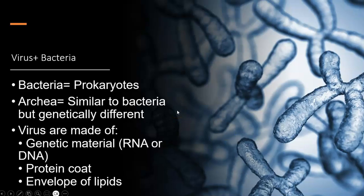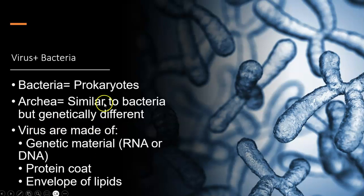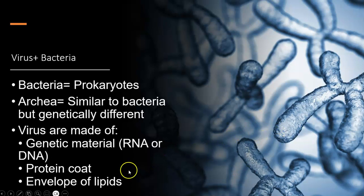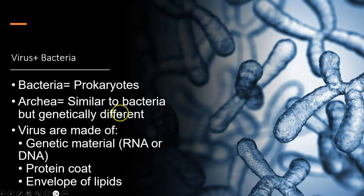The first thing you're going to go over is viruses and bacteria. You're going to want to know that bacteria are prokaryotes, and you're going to want to know about archaea, which are similar to bacteria. Know the basics of viruses: they're not alive, but they do have genetic material — either RNA or DNA — and they have a protein coat enveloped by some lipids. Review bacteria, archaea, and viruses and what they're made of.